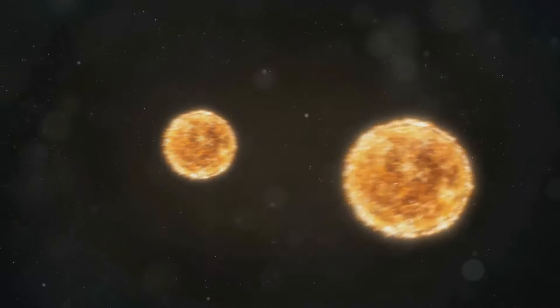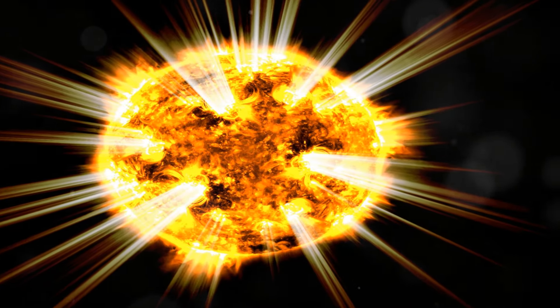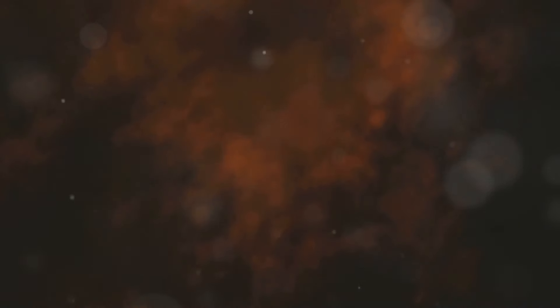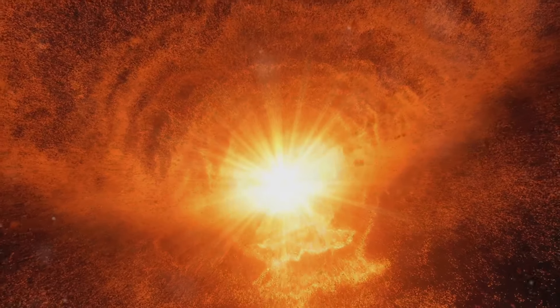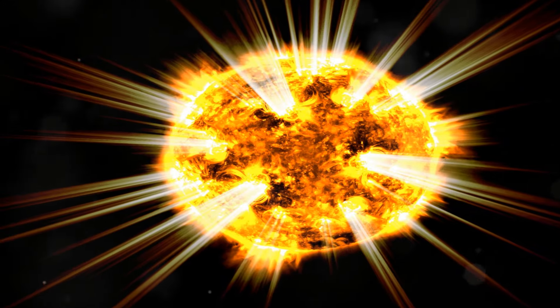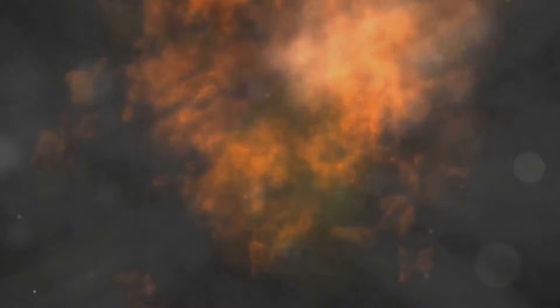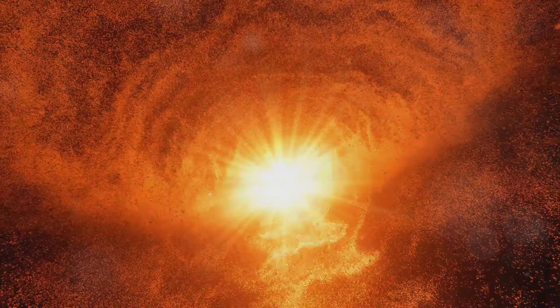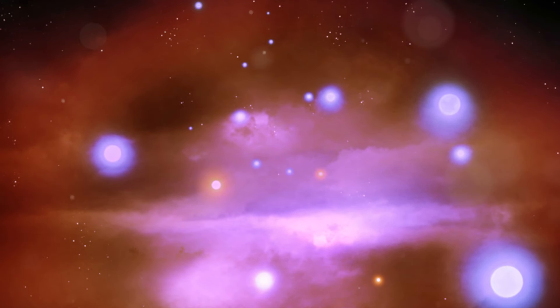Massive stars, like UY Scuti, live life in the fast lane, their immense gravity driving them to evolve at a rapid pace. They are fueled by a constant struggle between gravity, which seeks to compress them, and nuclear fusion, which pushes outwards, creating a delicate balance that defines their existence. As these stellar giants age, they progress through a series of stages, each marked by changes in their temperature, luminosity and size. They exhaust the hydrogen fuel in their cores, fusing it into helium, and then heavier elements, releasing tremendous amounts of energy in the process. As the star's core becomes increasingly dense and hot, it approaches the limits of nuclear fusion, setting the stage for a spectacular demise. The study of massive stars, like UY Scuti, provides a glimpse into the future of our own Sun, albeit on a much grander scale.